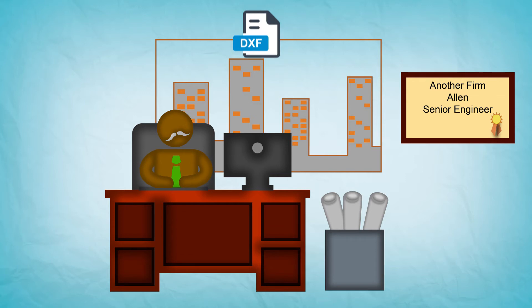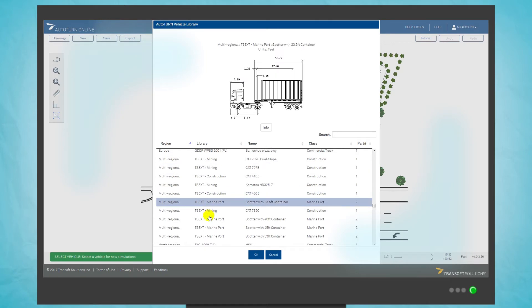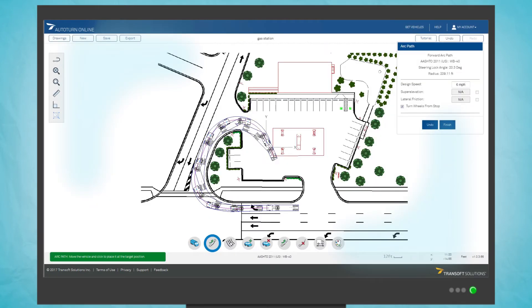He just simply uploads a DXF file or aerial photo into AutoTurn Online, chooses a vehicle, then quickly runs his own vehicle checks to complete a design review in minutes.